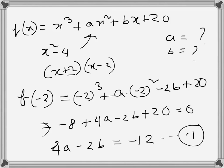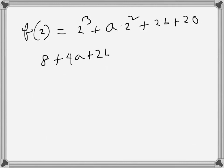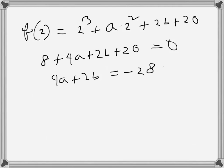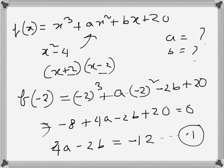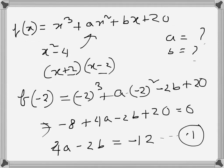Similarly, x minus 2 divides, so f(2) should also be 0. So 2³ + a(2²) + 2b + 20 = 0, giving 8 + 4a + 2b + 20 = 0. Therefore 4a + 2b = -28. That is Equation 2.